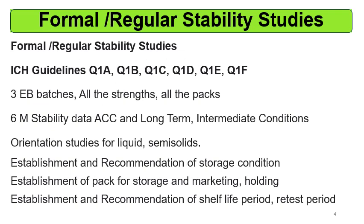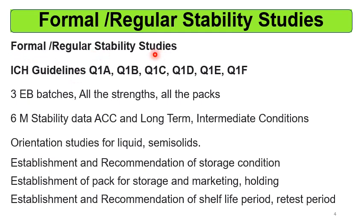Now the formal stability studies — these are performed as per the ICH guidelines: ICH Q1A, Q1B, Q1C, Q1D, Q1E, and Q1S. These guidelines are there for the formal or regular stability studies, and they give clear and correct information about the requirements for the stability studies.